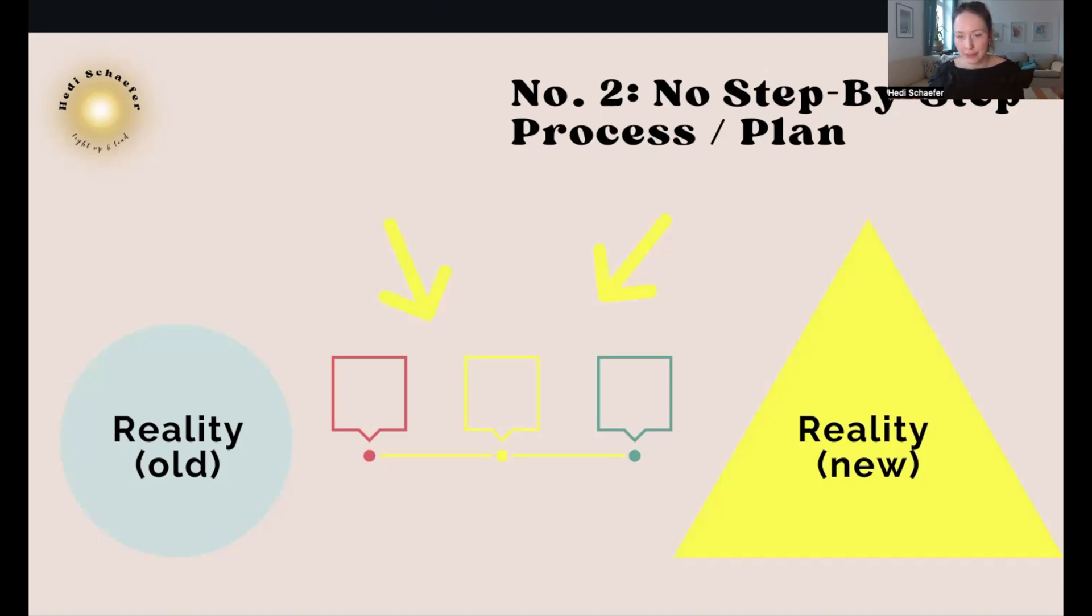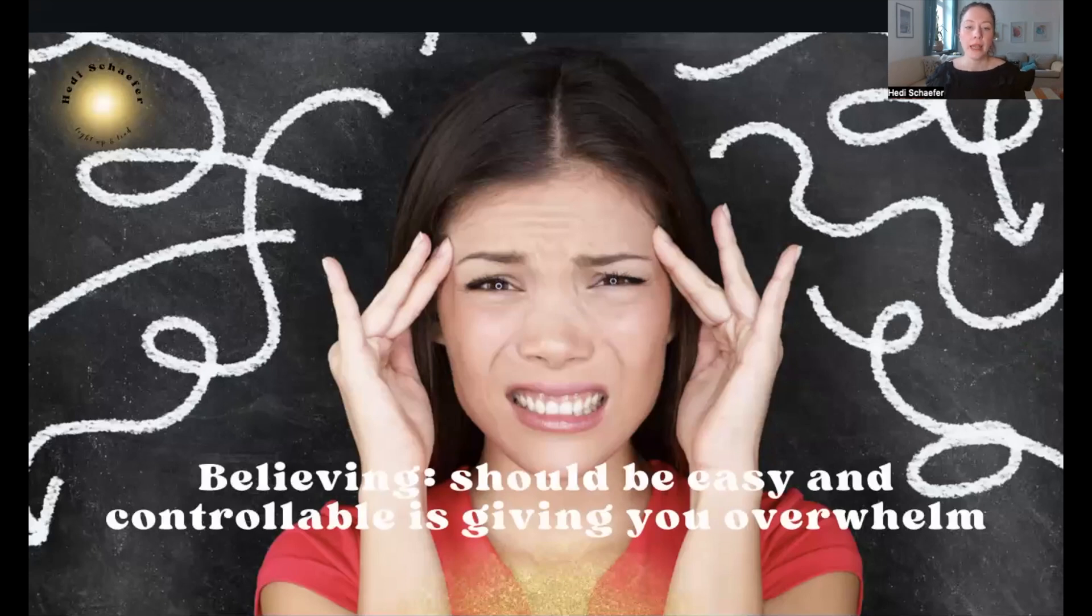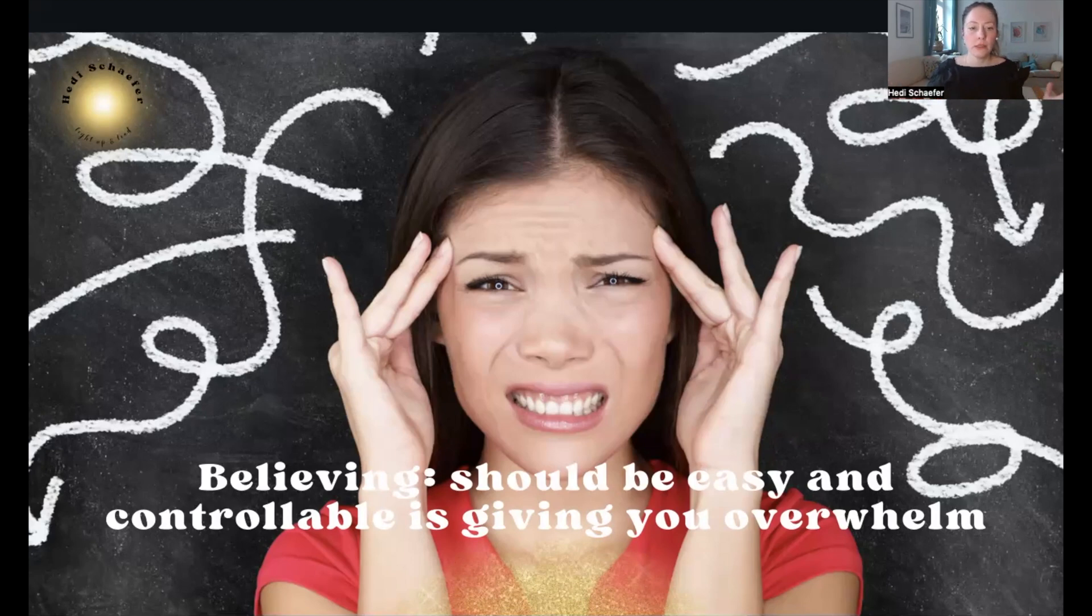If we are believing that there's actually a plan to it, then we get punched in the face. Like Mike Tyson said so nicely, 'If you have a plan, you get punched in the face.' It is not a step-by-step process or a step-by-step plan. Yes, it is a process, but it is very, very messy. And believing that it should be easy and controllable is giving you overwhelm per se.